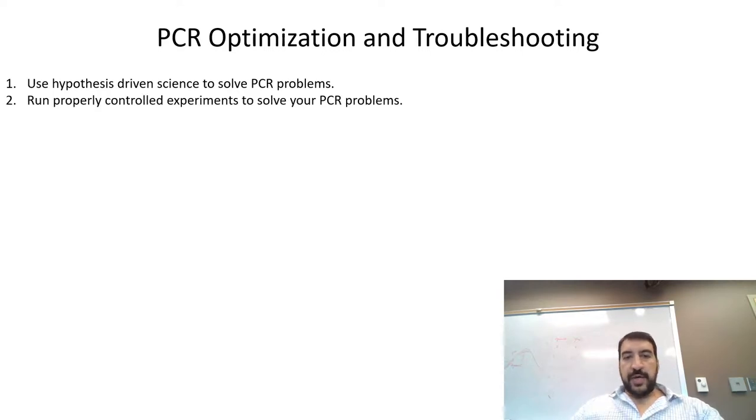Run properly controlled experiments to solve your PCR problems. This means always have a negative control. And you should also have a positive control when possible. They can simplify your diagnosis of problems greatly.